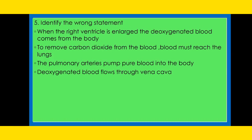The fifth question: Identify the wrong statement. Option A: When the right ventricle is enlarged, deoxygenated blood comes from the body. Option B: To remove carbon dioxide from the blood, blood must reach the lungs. Option C: The pulmonary arteries pump pure blood into the body. Option D: Deoxygenated blood flows through the lungs. The right answer is option C. Children, note that the question asks us to identify the wrong statement — it is the pulmonary veins, not pulmonary arteries, that pump pure blood into the body.